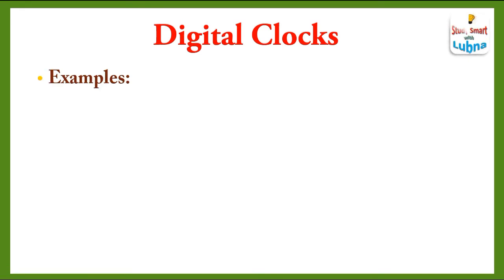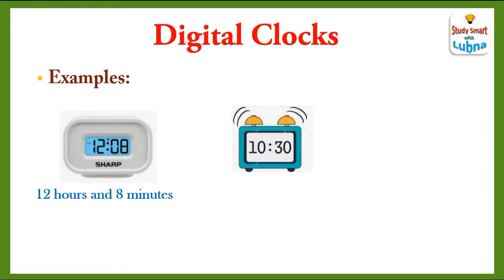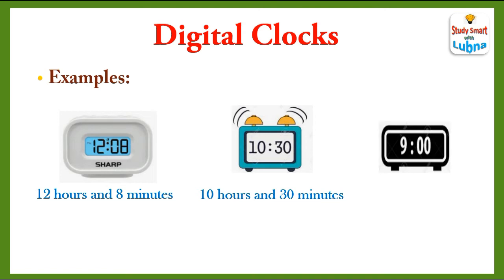A few more examples of digital clocks with their times are given. What time is it in this digital clock? It's 12 hours and 8 minutes. What time is it in the second digital clock? It's 10 hours and 30 minutes. What time is shown in the third digital clock? It's 9 hours.